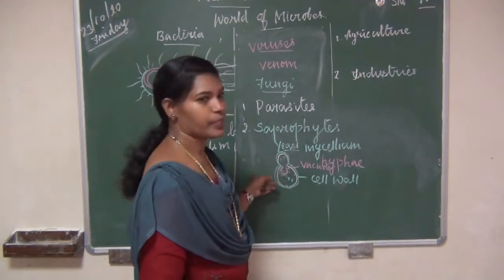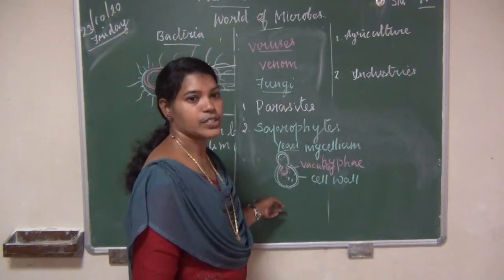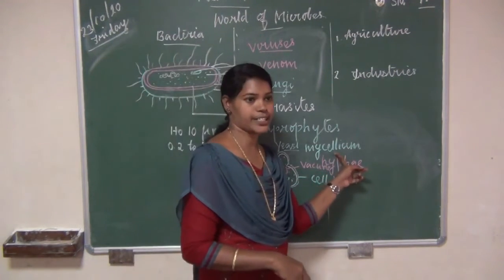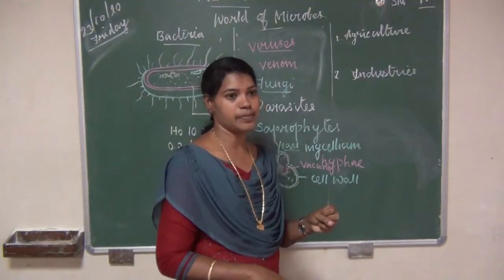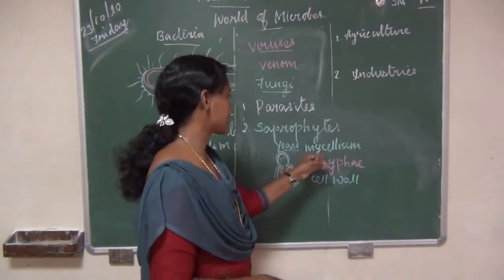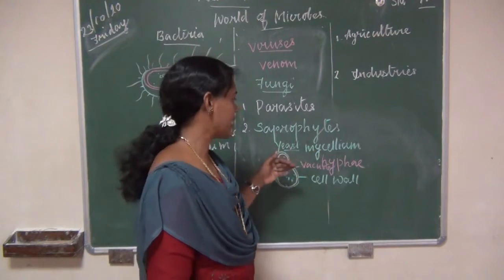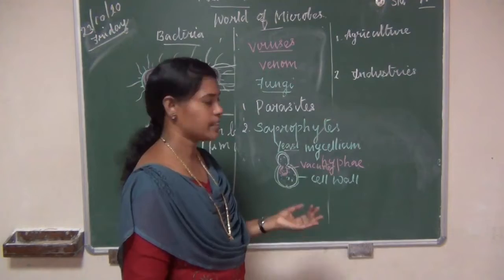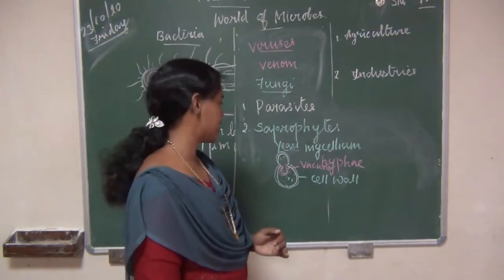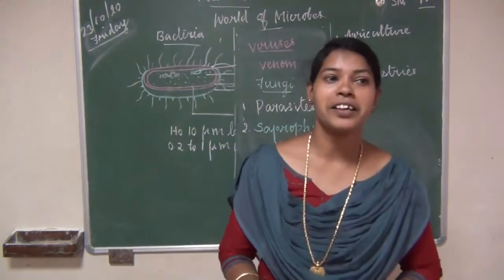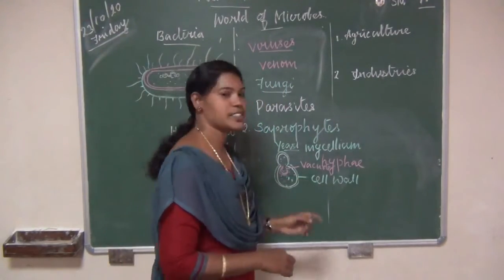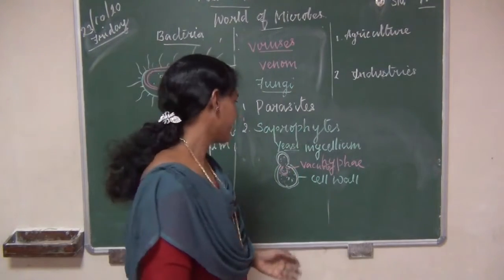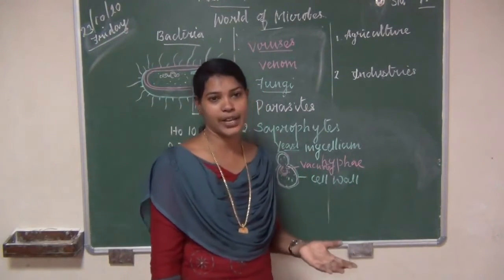Structure of fungi summary: in multicellular forms, the thallus is called mycelium — a complex structure where each hypha is tubular and filled with protoplasm, nucleus, and cellular organelles. It is covered by a cell wall made up of chitin-cellulose. Food materials are stored in the form of granules.